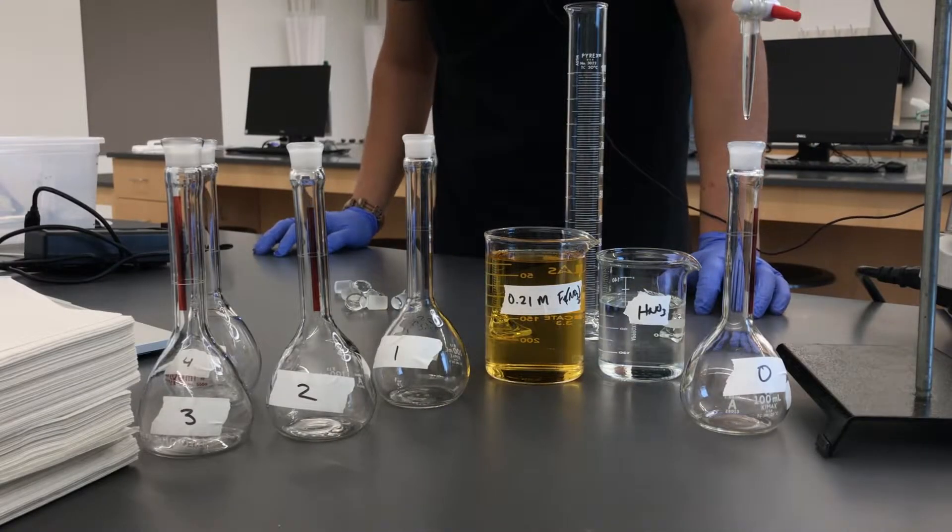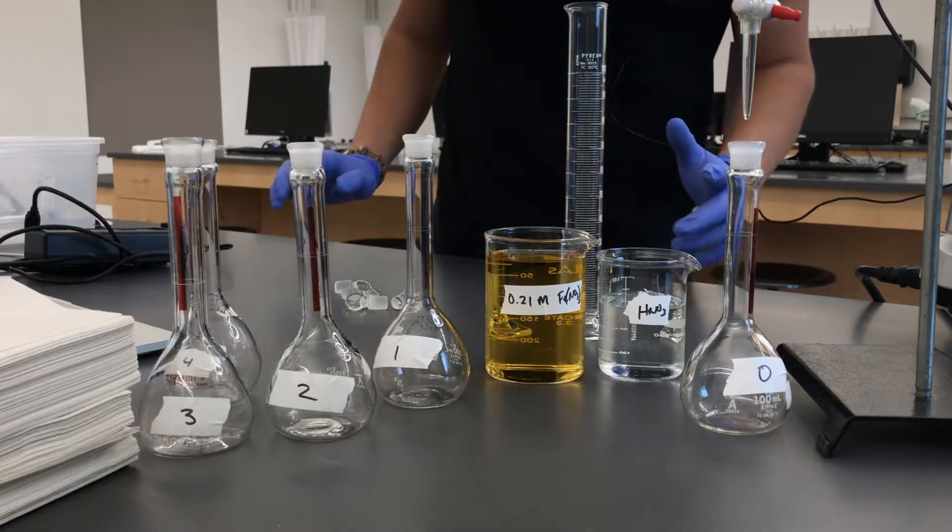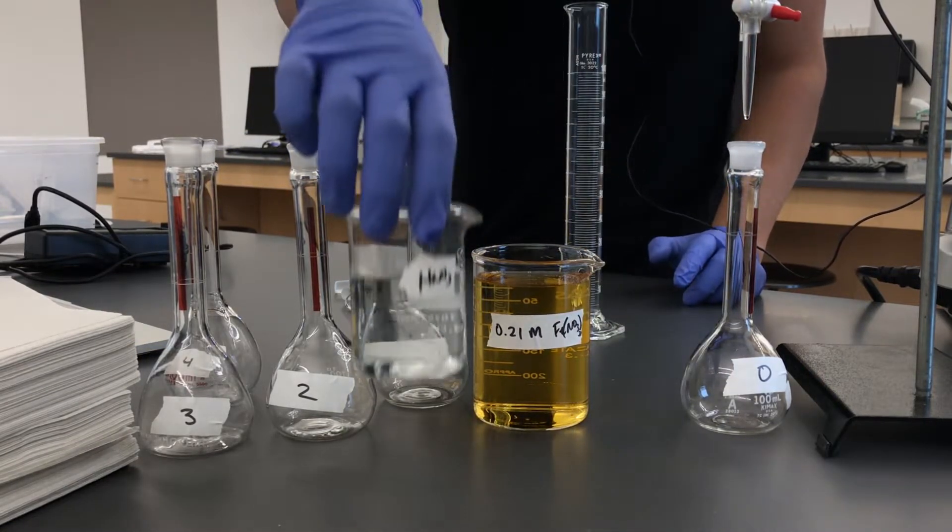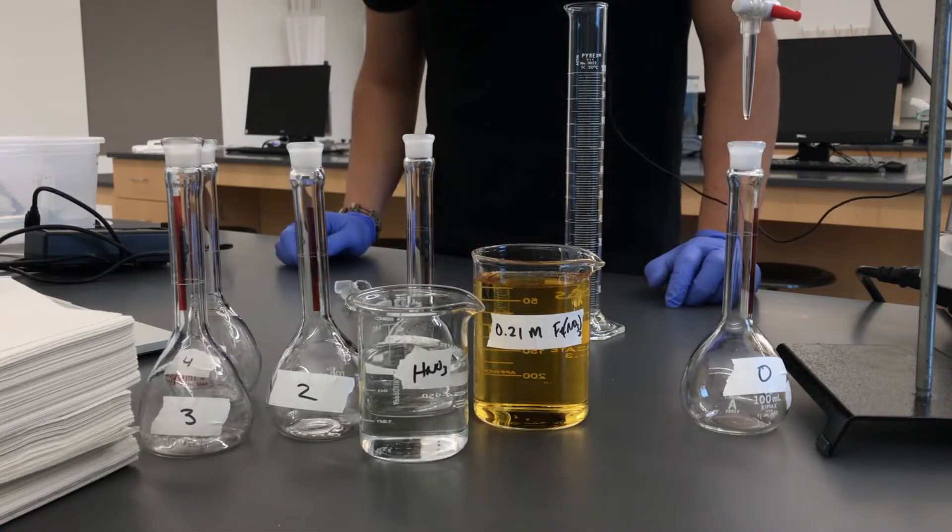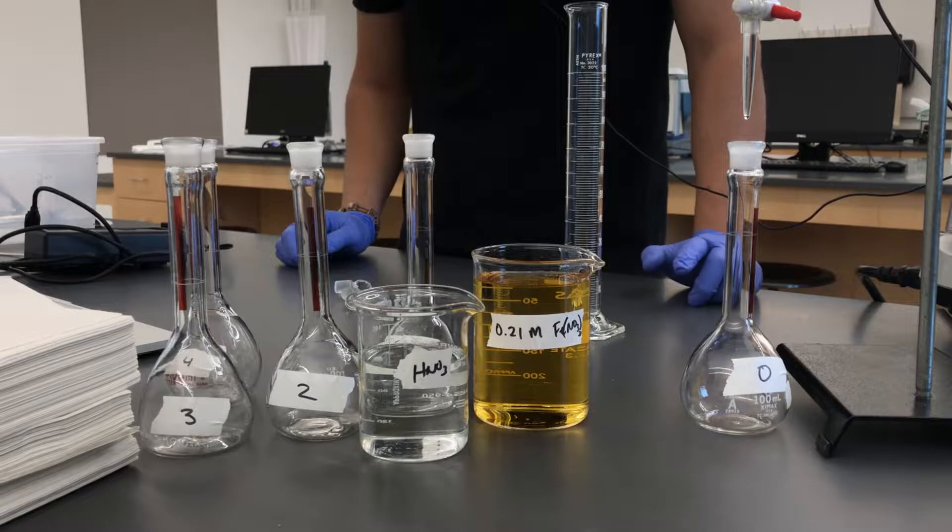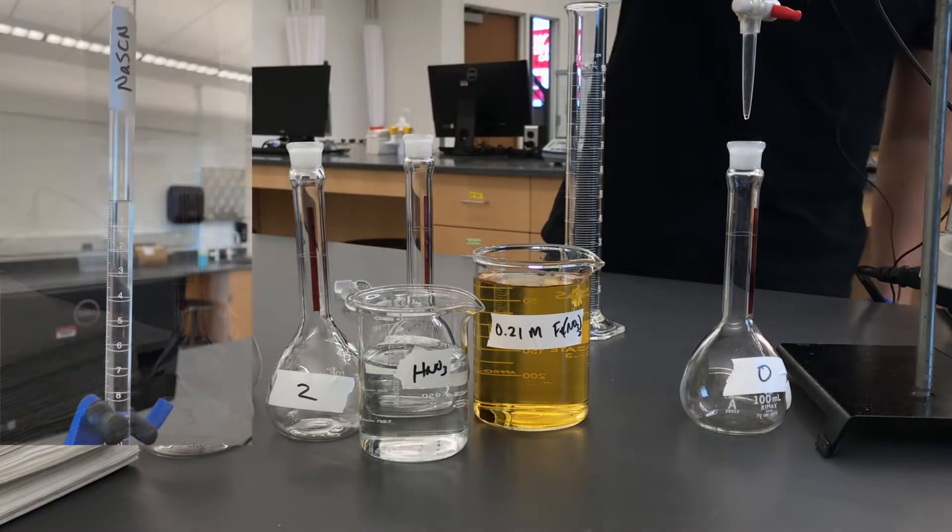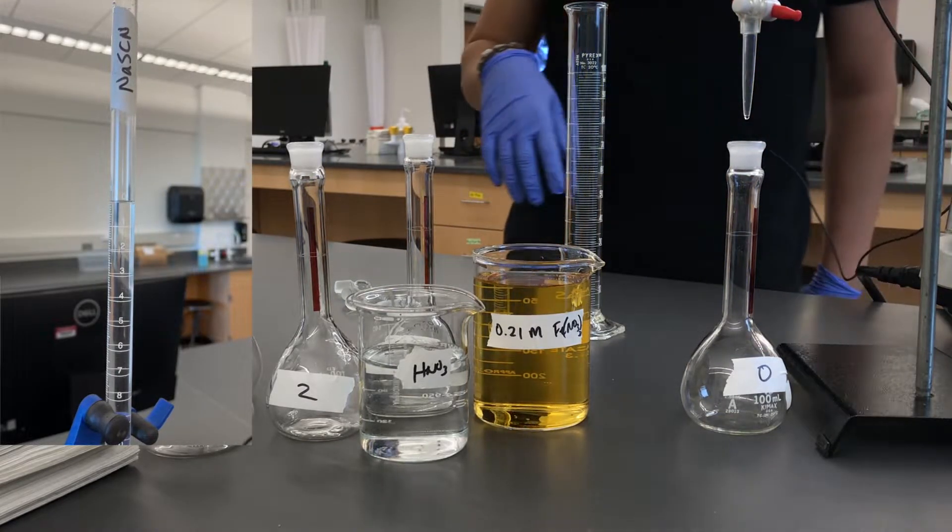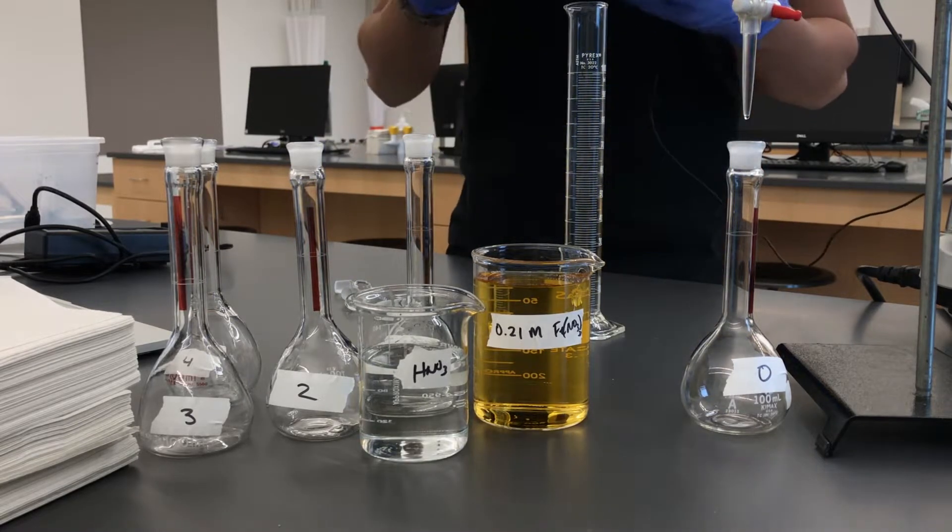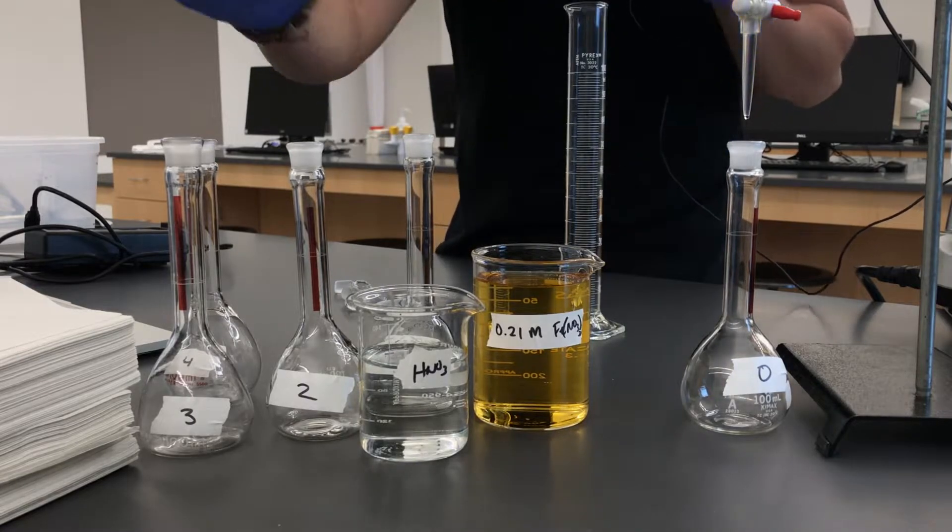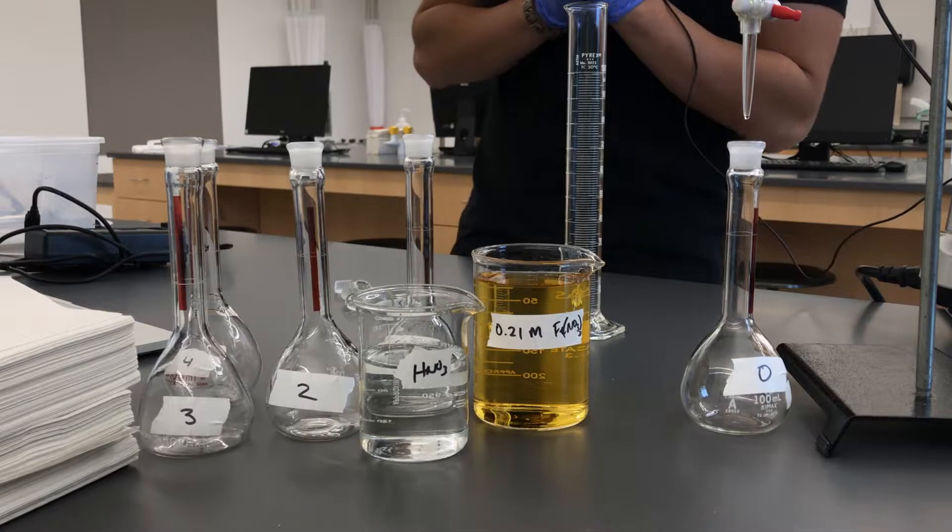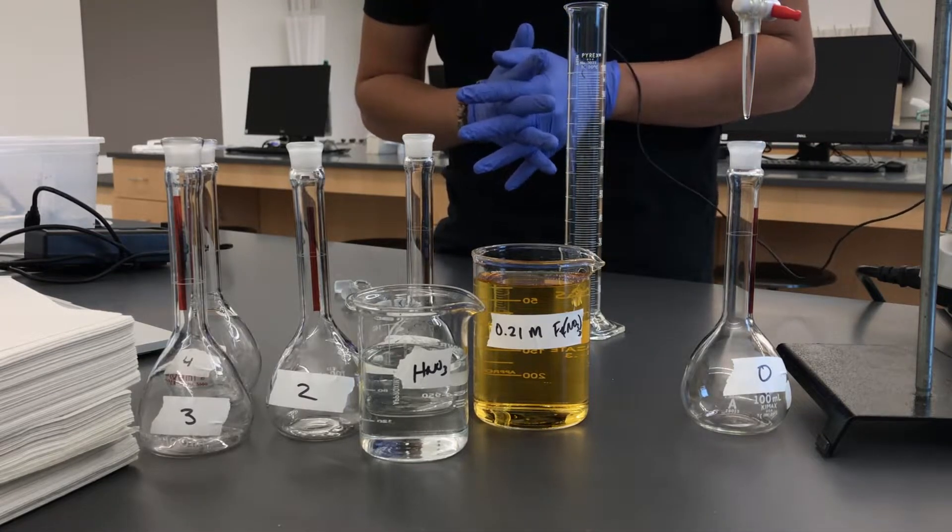To set up our experiment, we have some of the more concentrated ferric nitrate in a labeled beaker, as well as some nitric acid. And then finally we've got some sodium thiocyanate in the buret which is all set up here on the ring stand. We also have some clean, dry volumetric flasks, five of them labeled 0 through 4. These are the ones that we're going to use to make our standard solutions to make our Beer's Law plot.